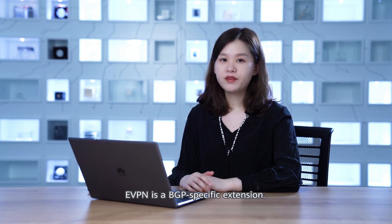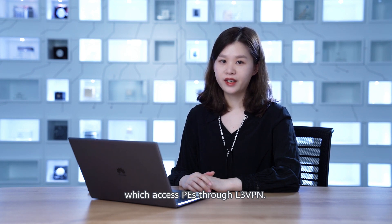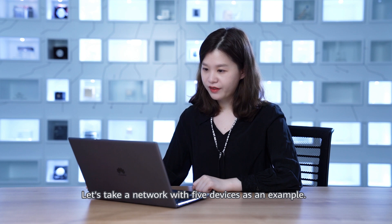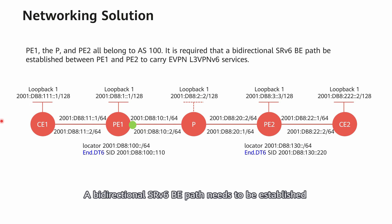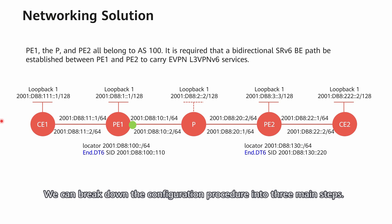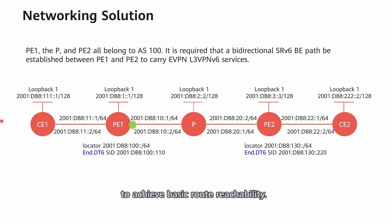From the perspective of the control plane, EVPN is a BGP-specific extension. L3 VPNv6 indicates that IPv6 is deployed between CEs, which access PEs through L3 VPN. Using a network with five devices as an example: P1, the P, and P2 all belong to AS100 on the public network. A bidirectional SRV6 BE path needs to be established between P1 and P2 to carry EVPN L3 VPNv6 services. The configuration procedure breaks down into three main steps, the first of which involves configuring IS-IS on P1, the P, and P2 to achieve basic router reachability.